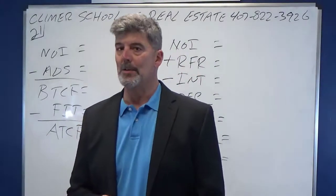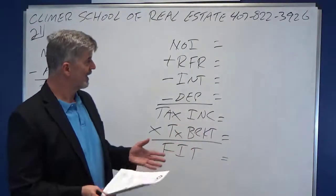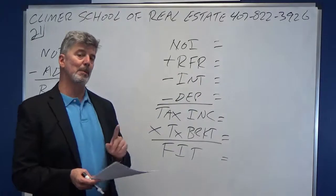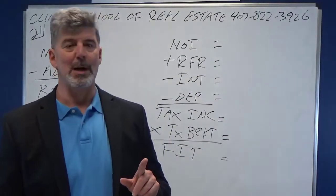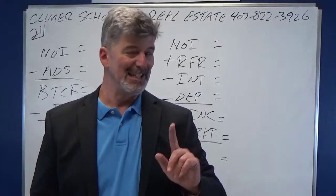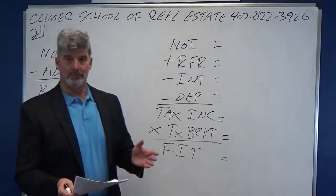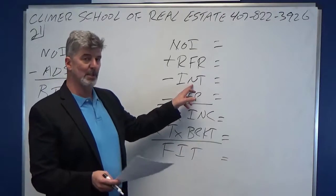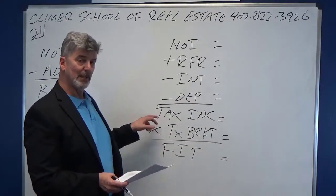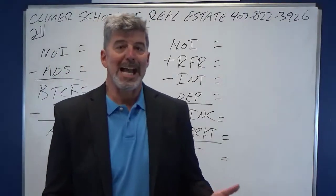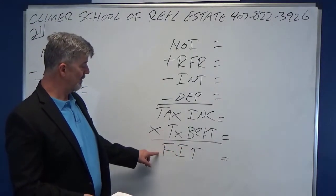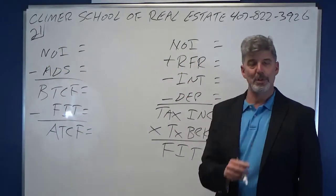The question now is how do you calculate federal income tax? You start again with NOI. Add back in reserve for replacements — remember, it's an expense while you're analyzing a property, but not to the IRS. You haven't really spent the money; you set it aside. It's actually income because you've earned it. They allow you to write off your mortgage interest — not the principal, the interest — and your depreciation. That gives you your taxable income. How much do you pay in taxes? Depends on your tax bracket. The more money you make, the higher the tax bracket. That gives you your federal income tax, which gives you your after-tax cash flow.